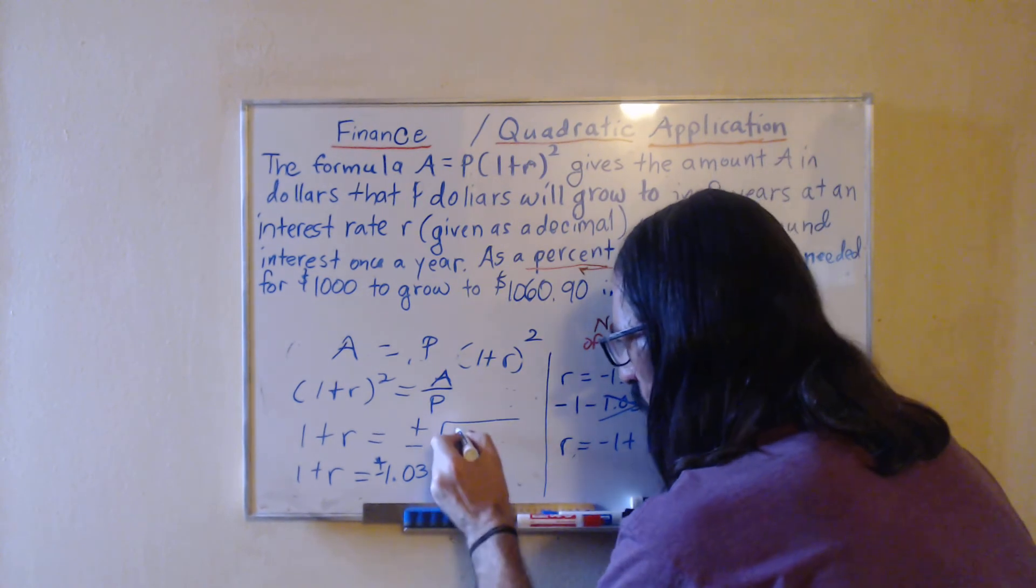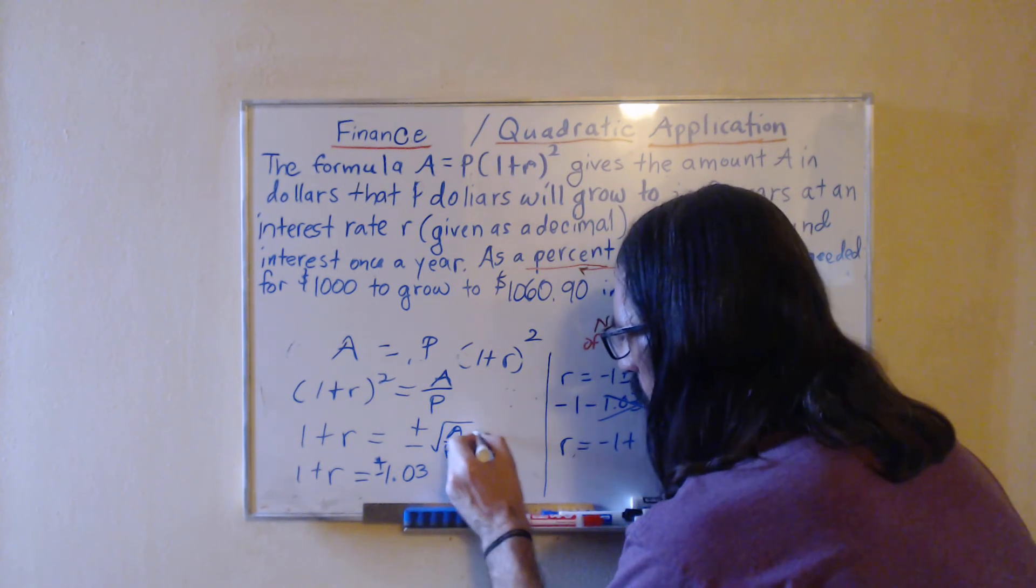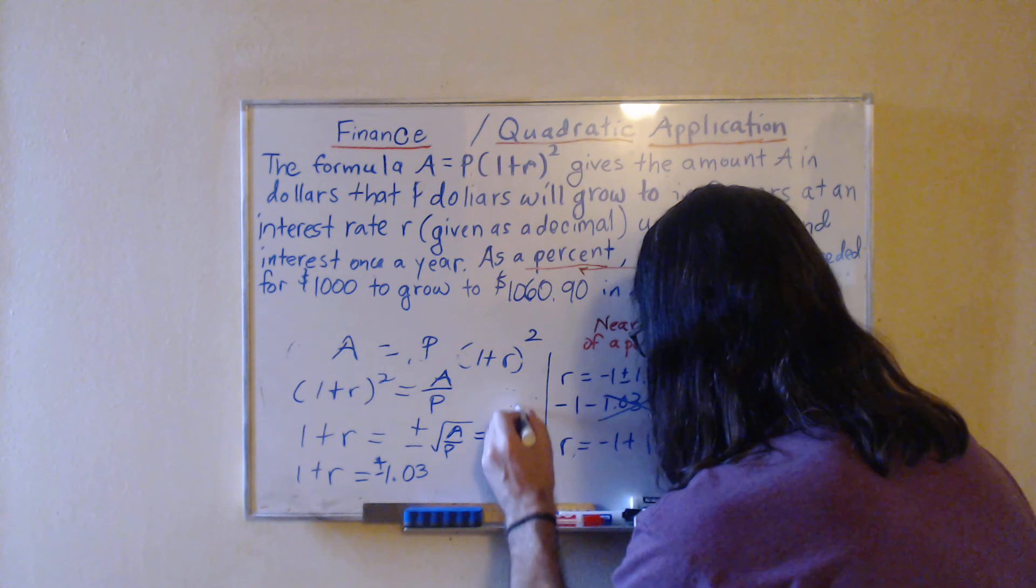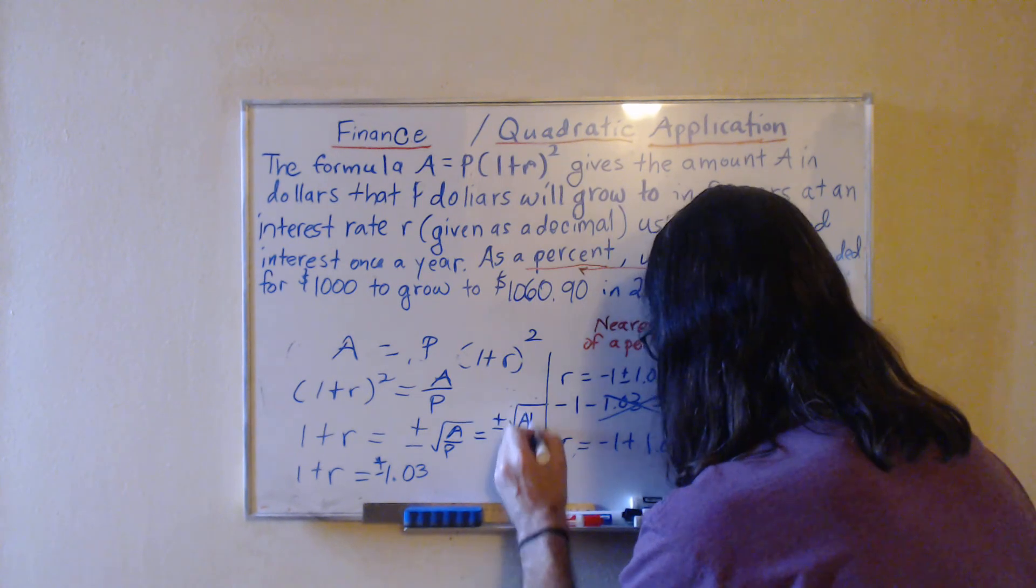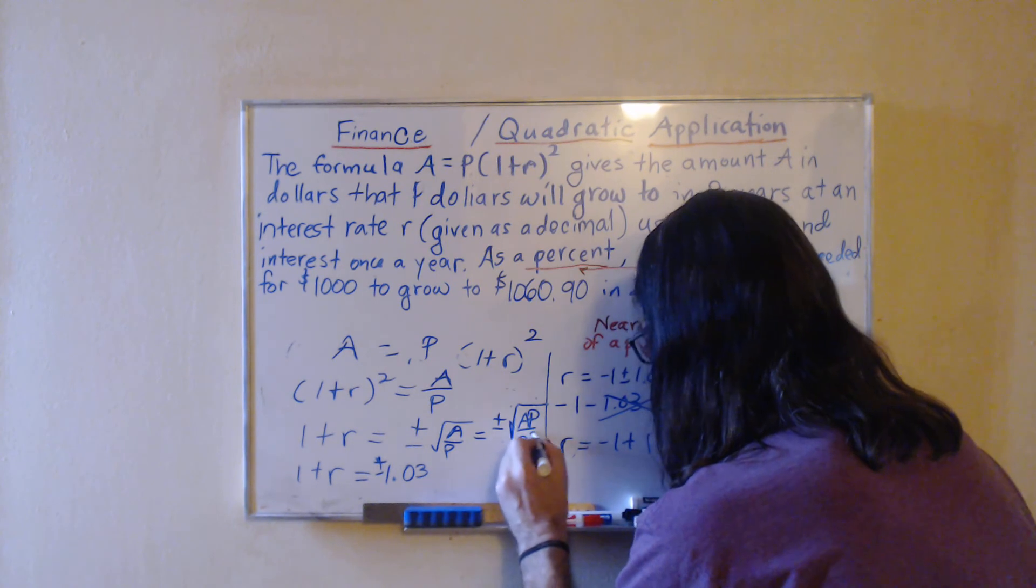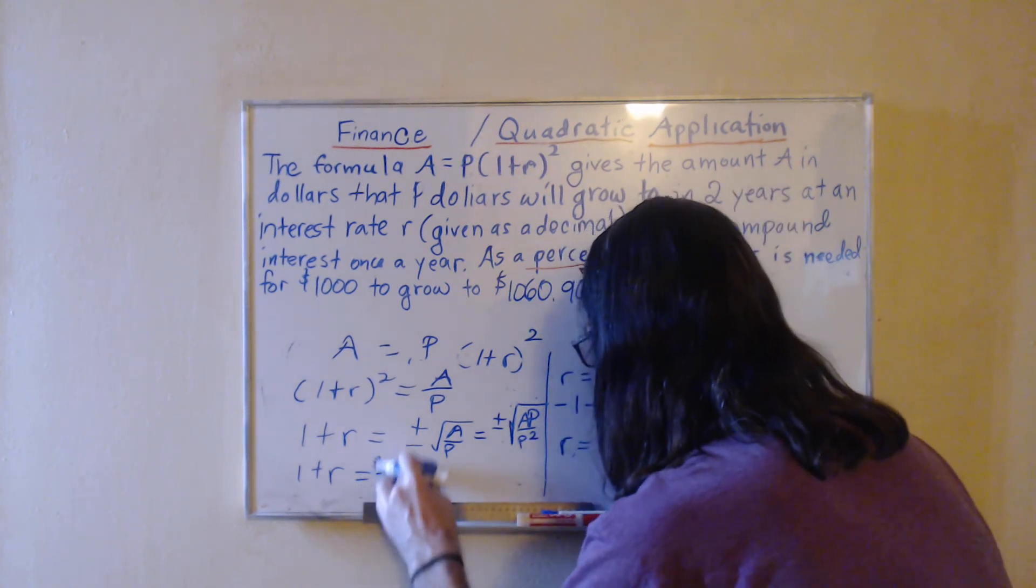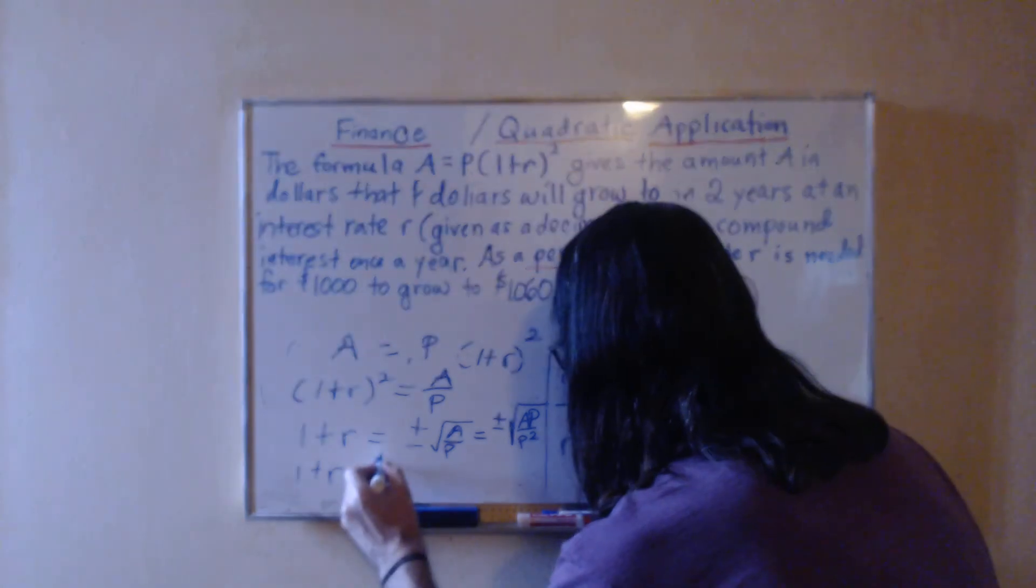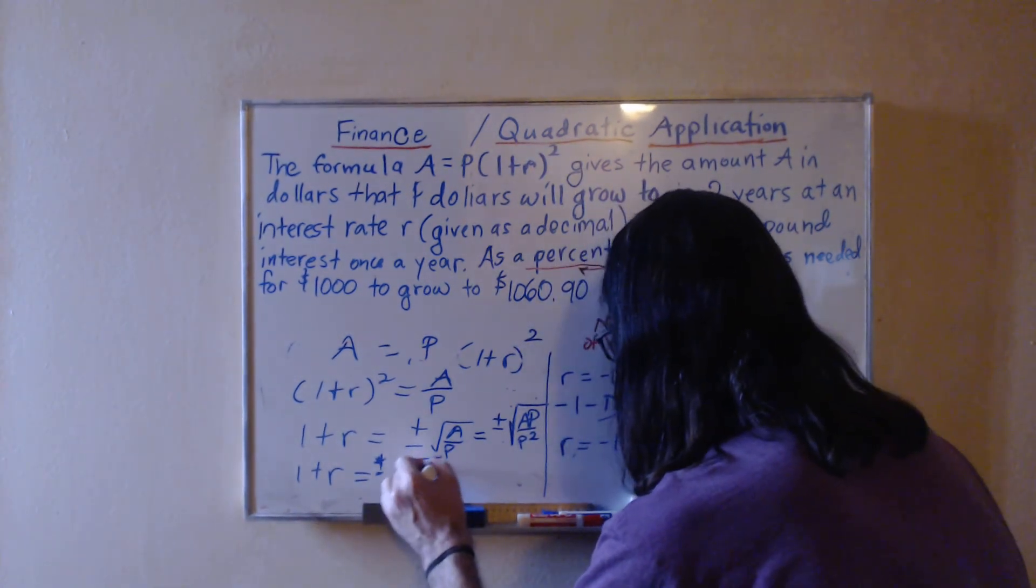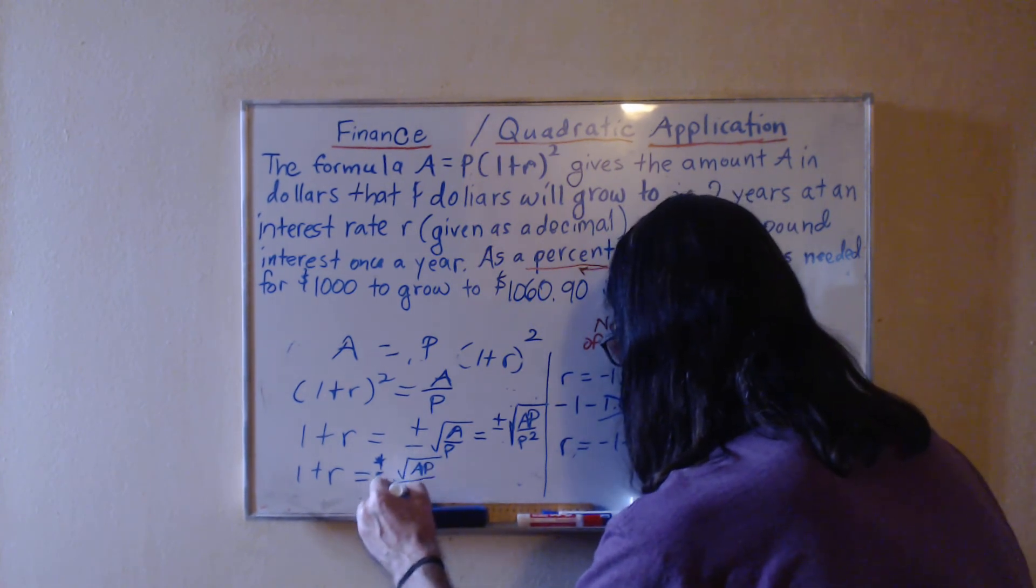Applying the square root property, we'd have to multiply top and bottom by P. Because when you split up that square root, the square root of P squared is just P.